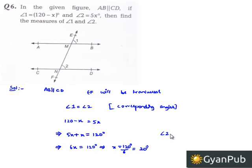Therefore, angle 2 is equal to 5 times 20 degrees, which is equal to 100 degrees. And as angle 1 is equal to angle 2, we can say that angle 1 is also equal to 100 degrees.